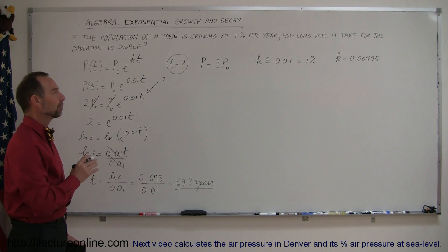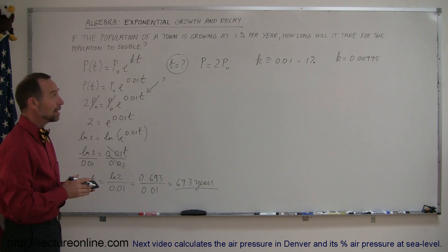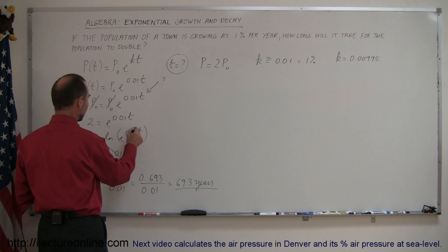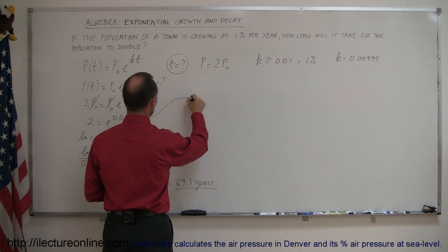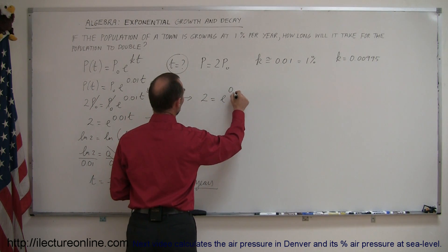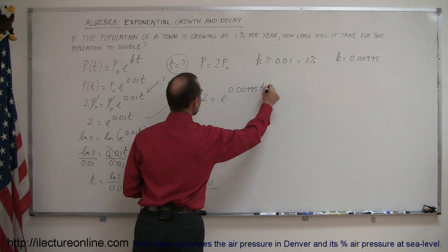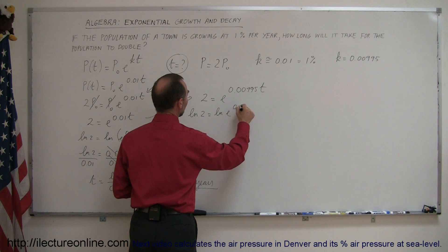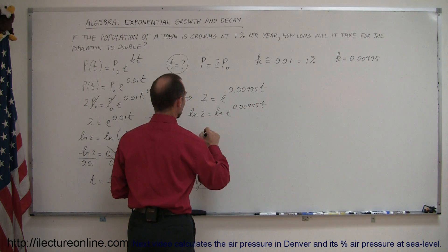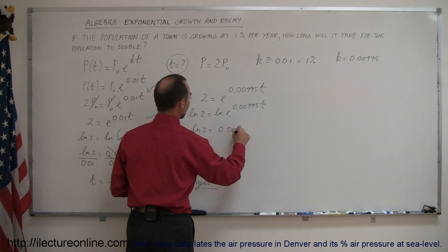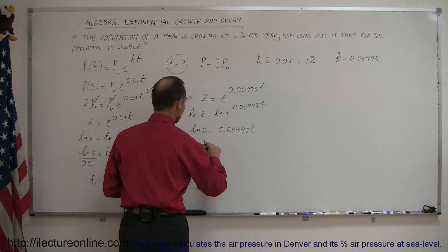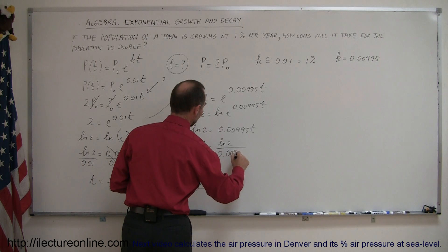Now, remember that that was an approximated value. We let k equal 0.01. Let's see what the answer would be if we use the exact value for k at 0.00995. So, let's rewrite the equation here. Instead of using the 0.01, we're going to use the 0.00995. So, let's take it from here. 2 is equal to e to the 0.00995t. Let's take the natural log of both sides. We have the natural log of 2 equals the natural log of e to the 0.00995t. That negates the exponential. So, we get the natural log of 2 equals 0.00995t. Reversing the equation, dividing both sides by 0.00995, we get t is equal to the natural log of 2 divided by 0.00995.